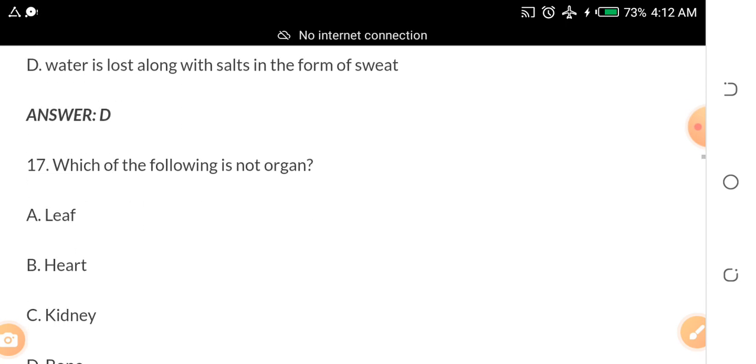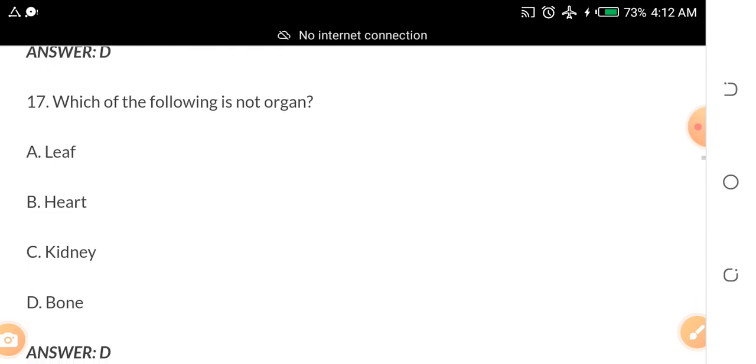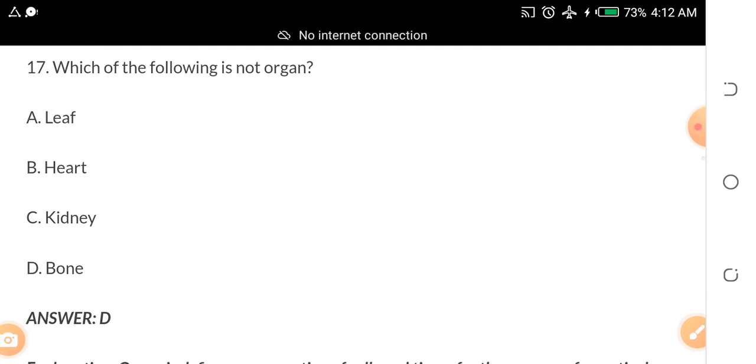Which of the following is not an organ? A. Leaf. B. Heart. C. Kidney. D. Bone. The answer is D. Bone is not an organ.